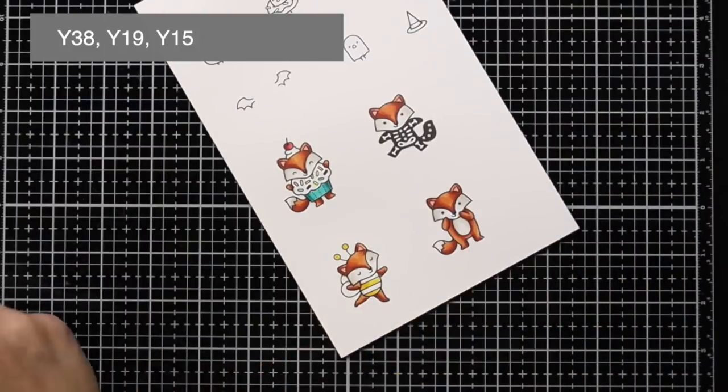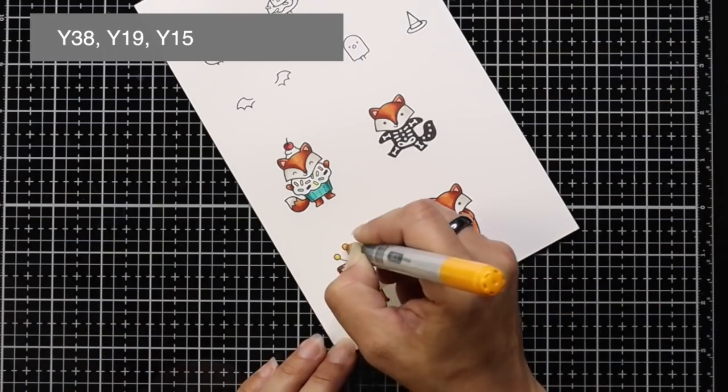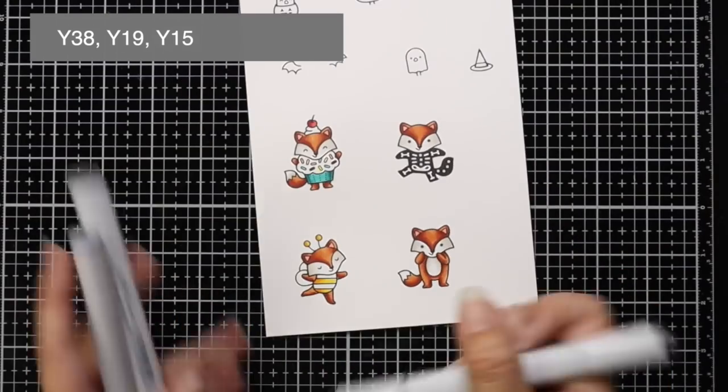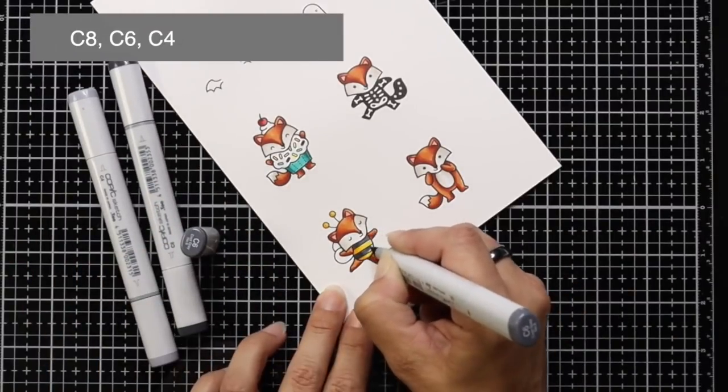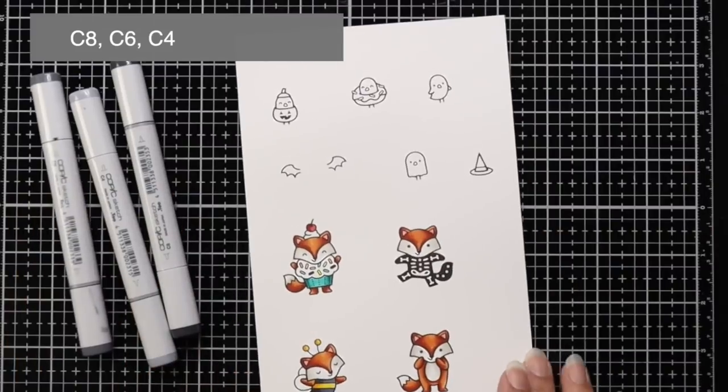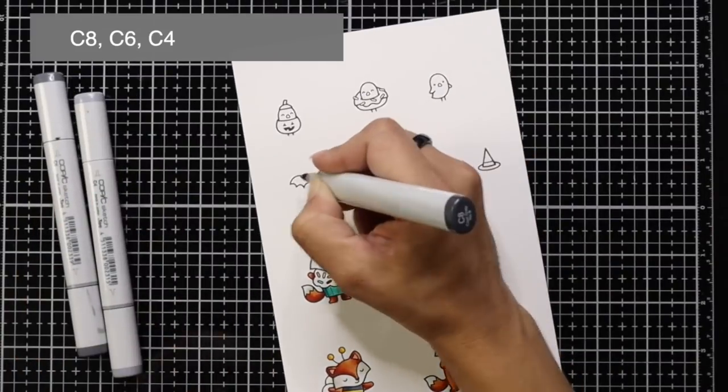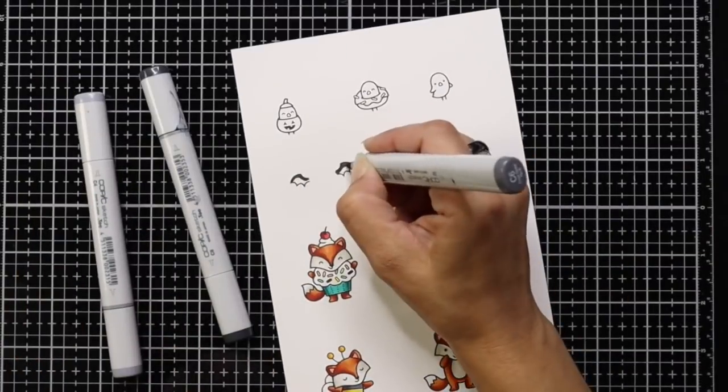So now I have Y38, Y19, and Y15 for this adorable little bumblebee costume. And then C8, C6, and C4 for the other remaining stripes. I did leave the wings blank. I didn't add anything to the wings of that costume.